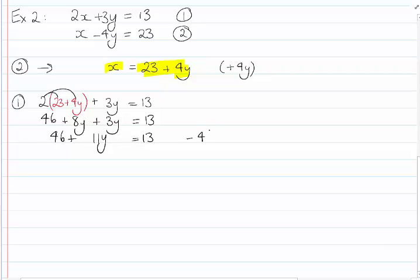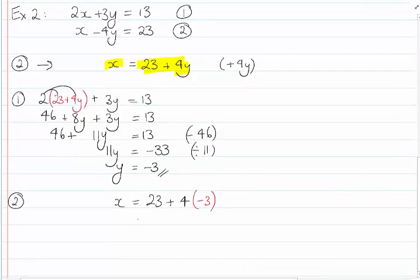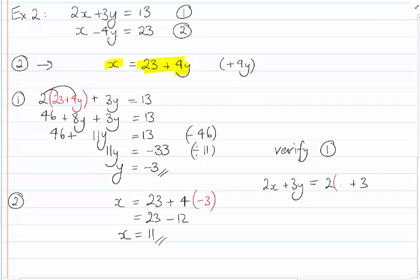Subtract 46 from both sides. 11y equals negative 33, divide by 11, and y is equal to negative 3. X equals 23 plus 4, and in red, negative 3, because y is equal to negative 3. So this equals 23 minus 12, which equals 11. So x is equal to 11, and now I'll very quickly verify.